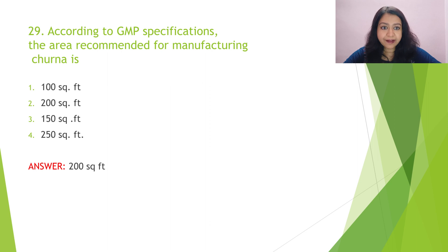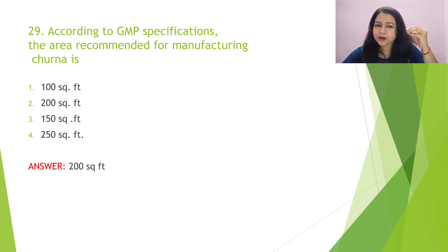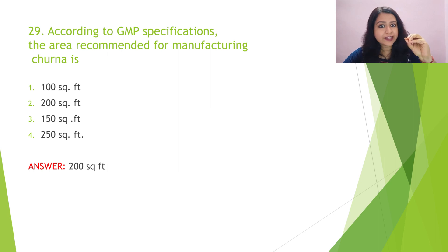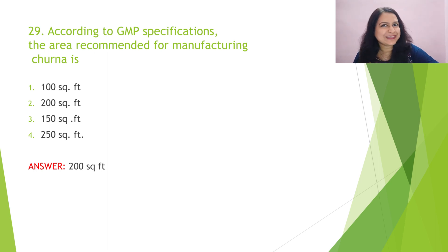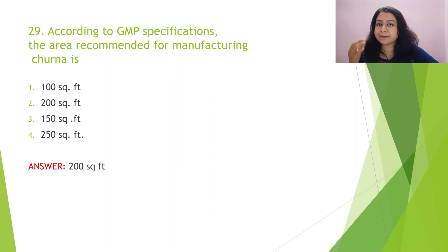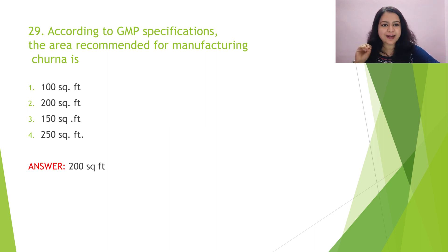Question 29 is from the pharmaceutical area. According to GMP specifications, the area recommended for manufacturing churna — the options are 100, 150, 200, and 250 square feet. These are all close together, making it tough to guess. A mnemonic connection: the shelf life of churna according to Bai is two months, and you can connect the number two with churna — 200 square feet. So 200 square feet is our answer.